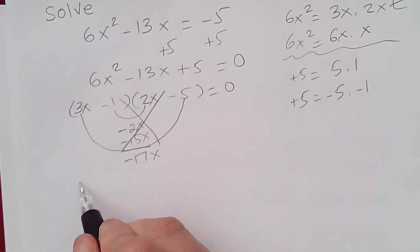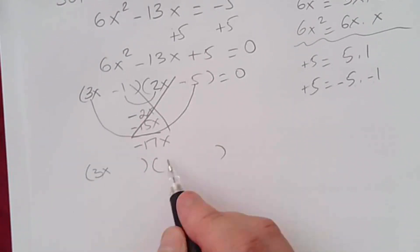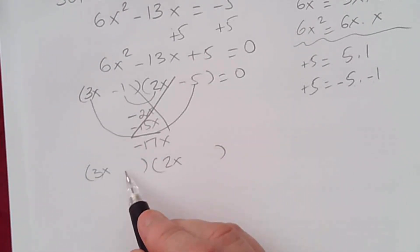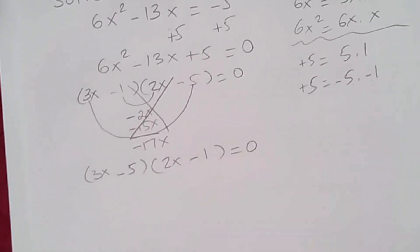So instead, we can put here 3x and 2x. Let's try to put the negative 5 on this side here. So negative 5 and negative 1. Let's see if this is the correct factoring.